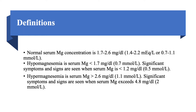Let's start with some definitions. Normal serum magnesium is 1.7 to 2.6 milligrams per deciliter, equivalent to 1.4 to 2.2 milliequivalents per liter, or 0.7 to 1.1 millimoles per liter in standard units. Hypomagnesemia is defined as serum magnesium less than 1.7 milligrams per deciliter, but significant symptoms and signs don't appear until it's below 1.2 milligrams per deciliter.